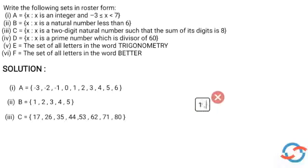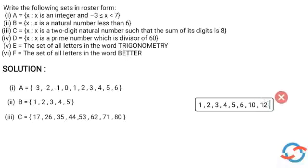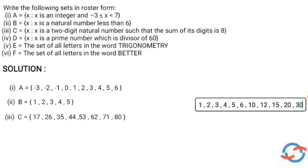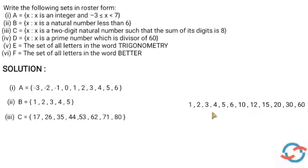The divisors of 60 are: 1, 2, 3, 4, 5, 6, 10, 12, 15, 20, 30, and 60 itself.